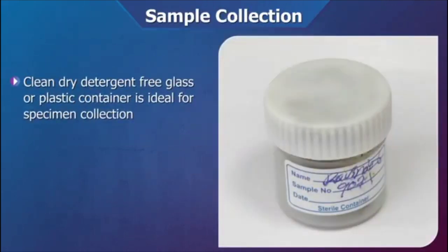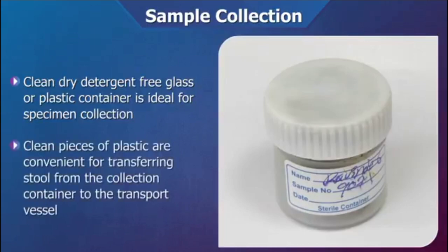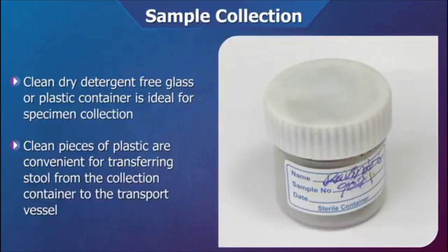A clean, dry, detergent-free glass or plastic container of a suitable size is ideal for collection of the specimen. Urine should not be passed simultaneously into the collection container. Clean pieces of plastic are convenient for transferring stool from the collection container to the transport vessel. The stool samples should be collected from different areas of the formed stool.